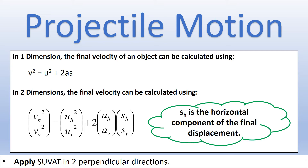This is how we express motion in two dimensions. For three-dimensional motion we would simply add a third term, vz, for the third direction, but we won't encounter that at A-level.